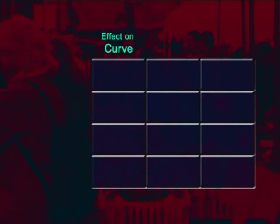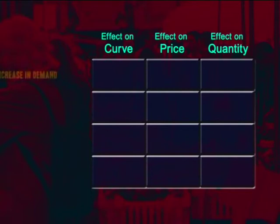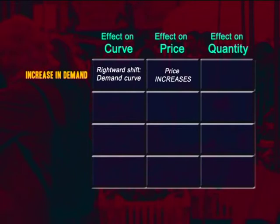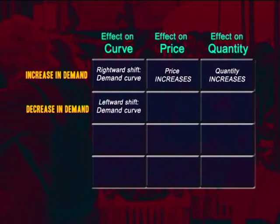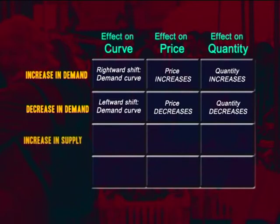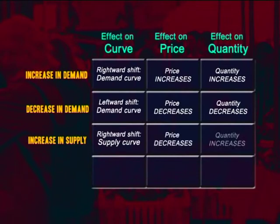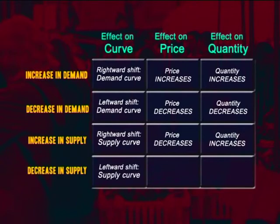We can summarise all of these permutations in a table. An increase in demand causes a rightward shift of the demand curve — price increases and quantity increases. A decrease in demand causes a leftward shift — price drops and quantity decreases. An increase in supply causes a rightward shift — price drops but quantity rises. A decrease in supply causes a leftward shift — price rises and quantity falls.